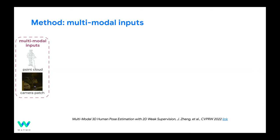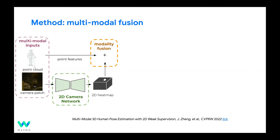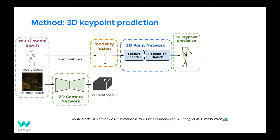For inference, the model takes multi-modal inputs — point clouds and camera images. Point clouds go through a PointNet-style network; images go through a 2D camera network to generate 2D heatmaps of potential keypoints. These are fused together into a multi-modal feature map, then processed by a 3D point network with a feature encoder to generate final 3D keypoint predictions.